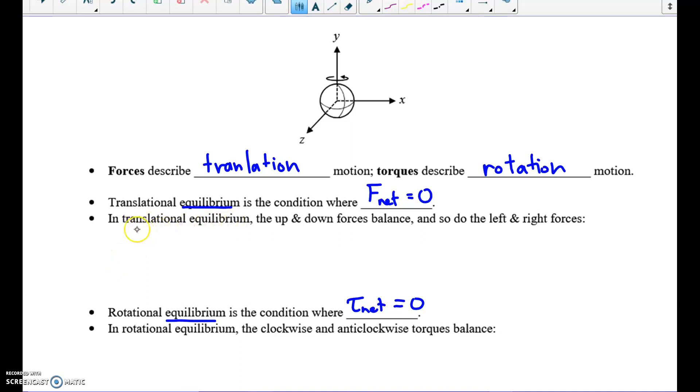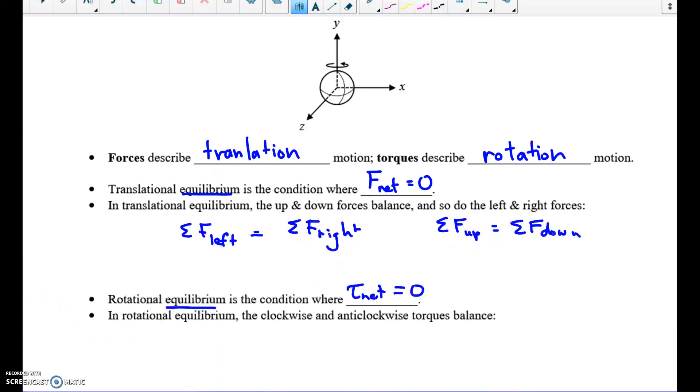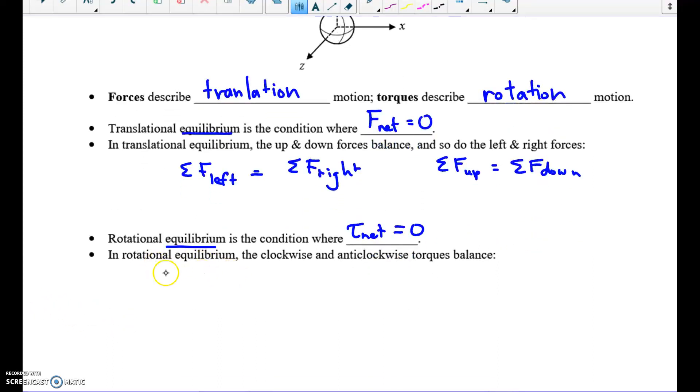So when we have translational equilibrium, we know that the sum of the left forces is equal to the sum of all the right forces. And likewise, the sum of all the up forces is equal to the sum of all the down forces. We can make similar statements about rotation, except we only have one thing to balance. The sum of the clockwise torques is equal to the sum of the counterclockwise torques.